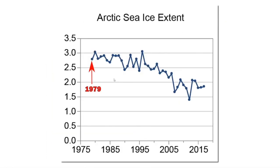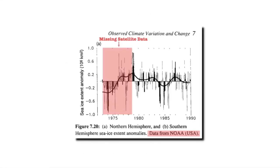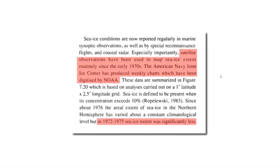Now let's look at the Arctic sea ice extent graph which starts in 1979. Starting in 1979 makes it look like sea ice extent is decreasing linearly. Now let's look at the data which is being hidden. This graph is from the 1990 Intergovernmental Panel on Climate Change report. It shows Arctic sea ice extent all the way back to the early 1970s, and as you can see, extent was much lower prior to 1979. 1979 was the peak. The data was taken from the National Oceanic and Atmospheric Administration.